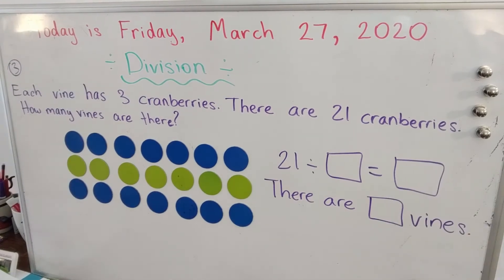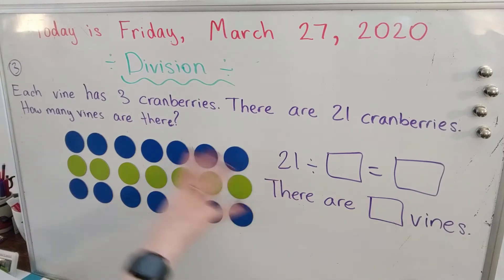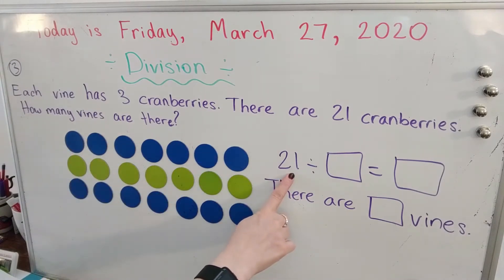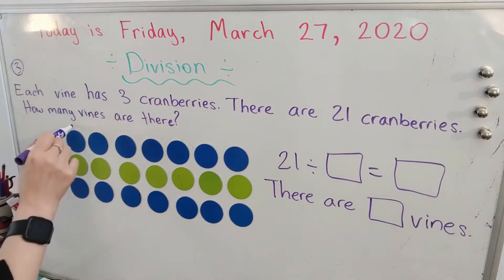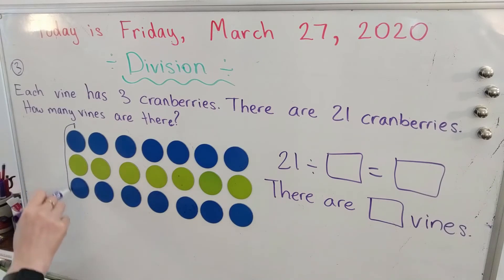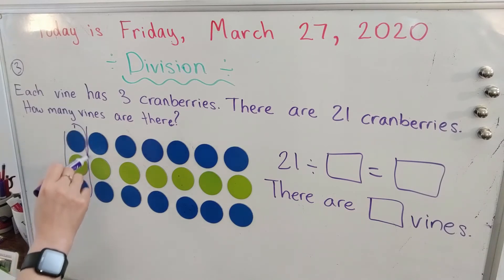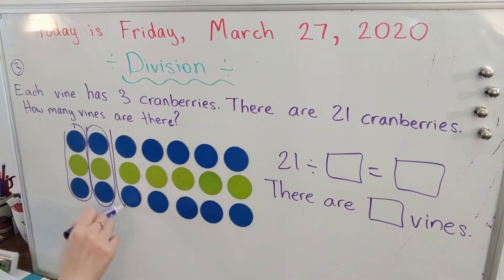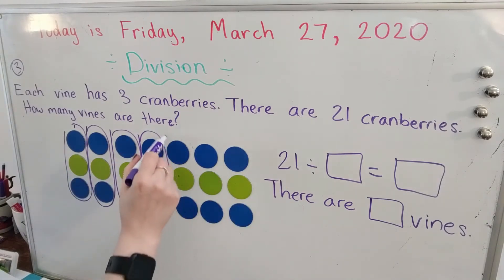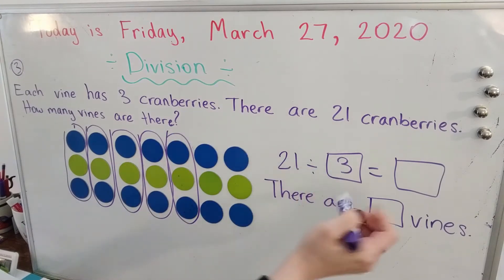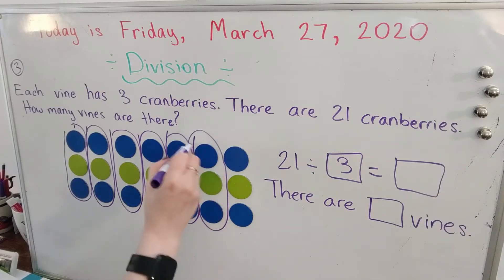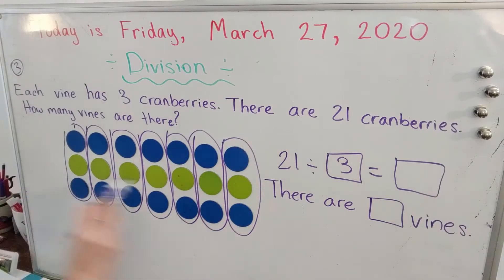Number three. Each vine has three cranberries. There are 21 cranberries. How many vines are there? So we know there are 21 cranberries — that's the total. So we start with the total. We want each vine to have three cranberries. So here's the first vine — I'll circle it. The first vine has three cranberries. We're trying to find out how many groups of vines there are. So we're going to divide 21 into groups of three. I'm going to continue dividing them into three.